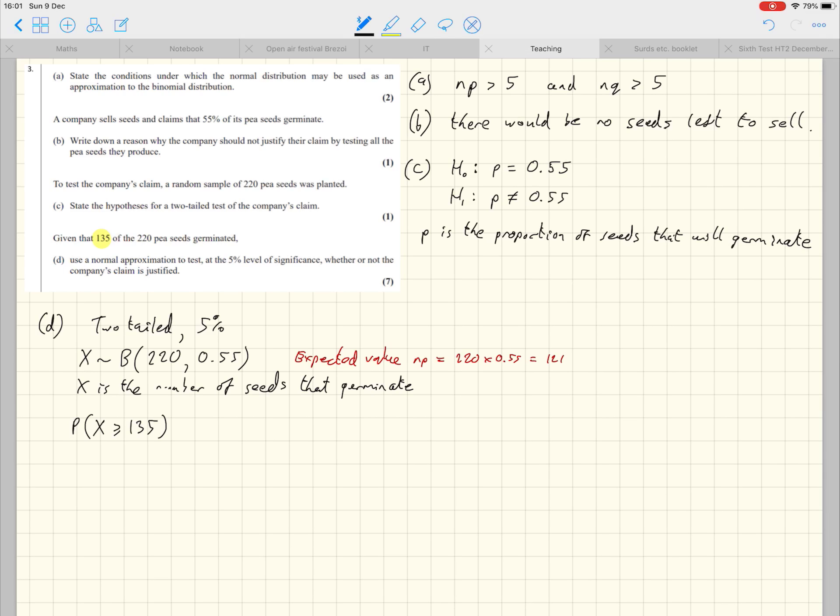Now, to use the binomial CD on the ClassWiz, we first need to write that in a calculator-friendly format, which is to say less than or equal to. Now with binomial, remember, this one here includes 135 and everything above it. So this one here should exclude 135 and everything above it. And that is to say that the highest value is 134. That we can type into the calculator and we get 1 minus 0.9669, which is 0.0330.